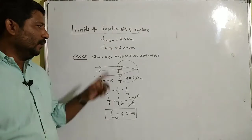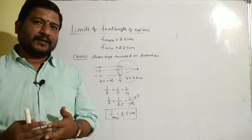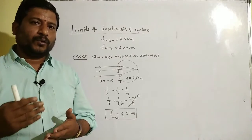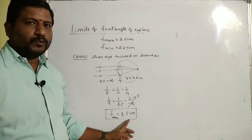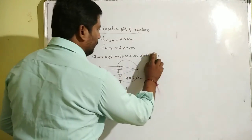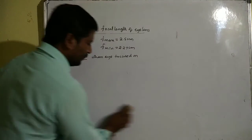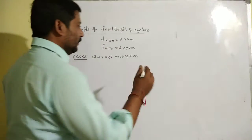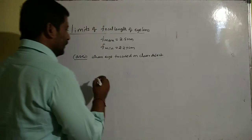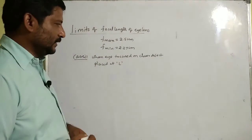That means, when the eye is focused on a distant object, to keep the image distance fixed or constant, the eye lens adjusts its focal length to the maximum value of 2.5 cm. Second case: when the eye is focused on a closer object.